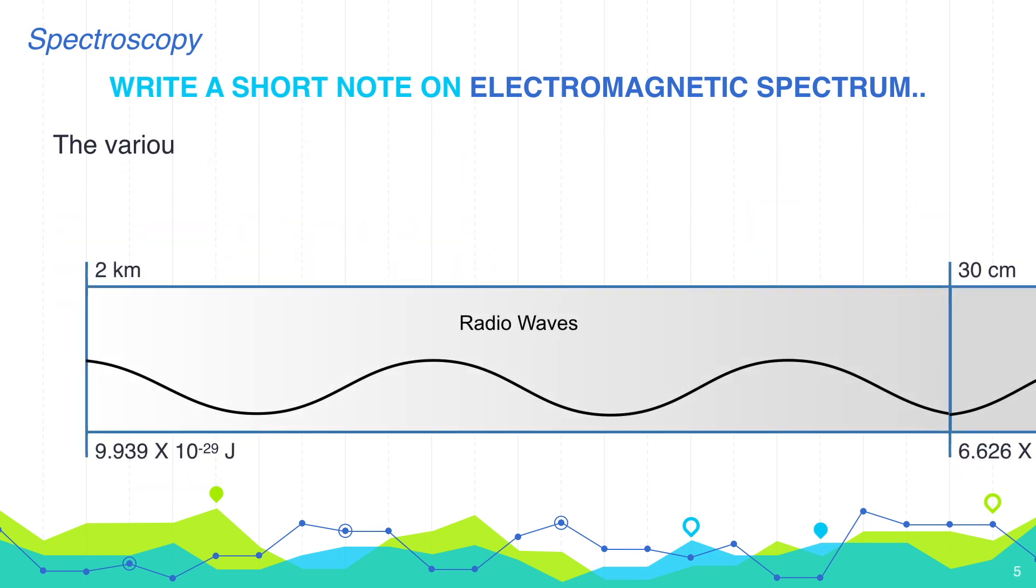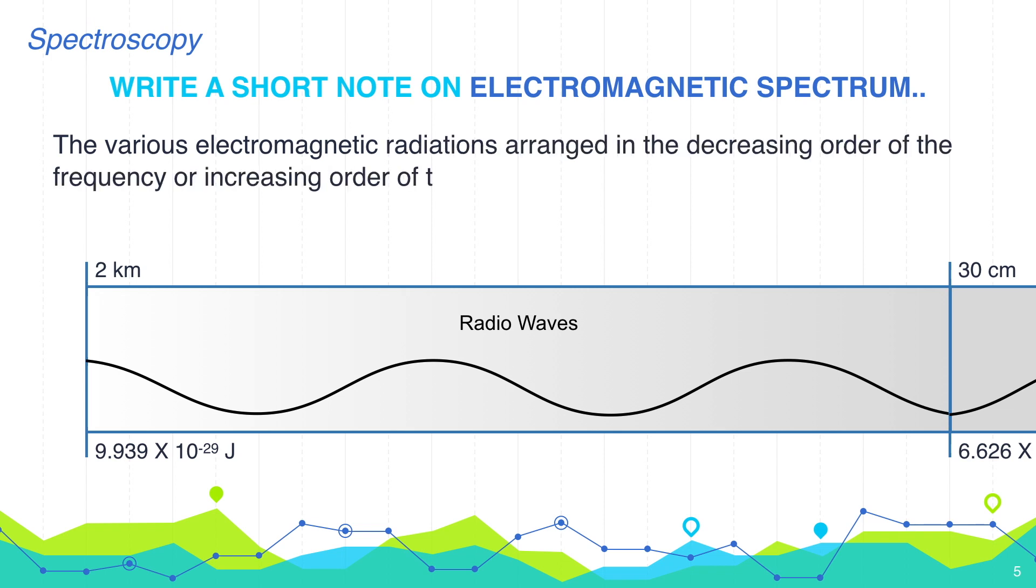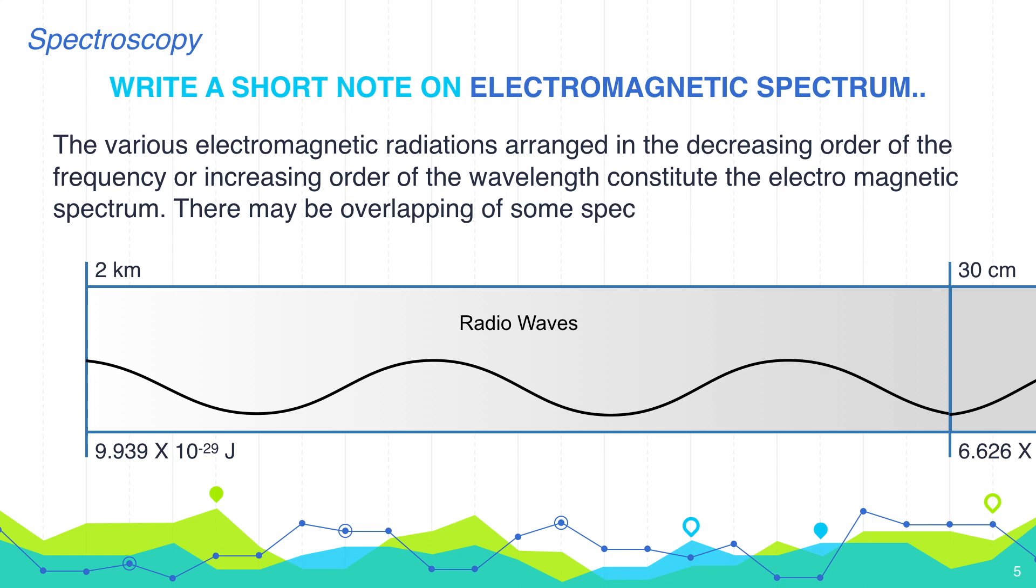The various electromagnetic radiations arranged in the decreasing order of the frequency or increasing order of the wavelength constitute the electromagnetic spectrum. There may be overlapping of some spectral regions also.